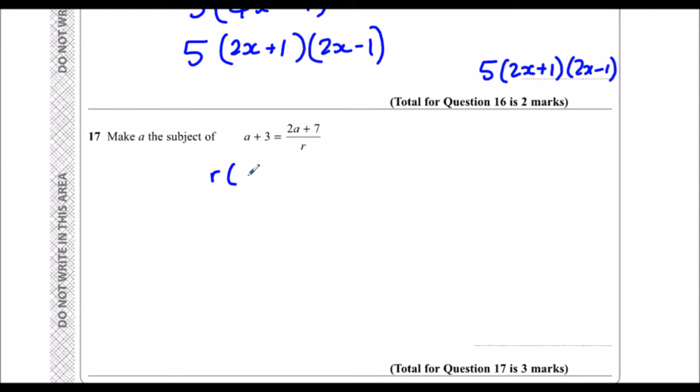So that will give me r(a+3) equals 2a plus 7. Expanding the bracket: ar plus 3r equals 2a plus 7. Now I need to get the a's on one side and everything else on the other side.